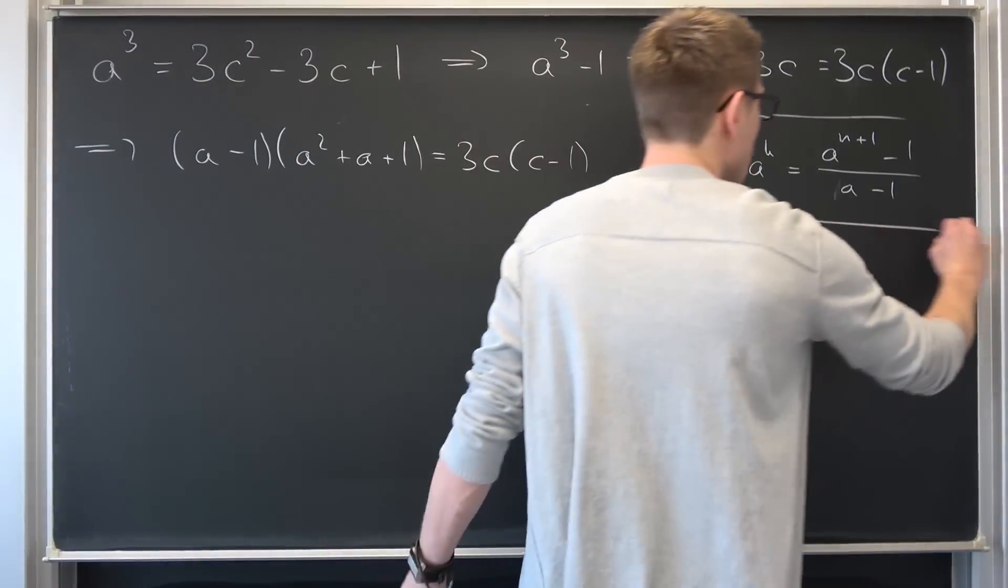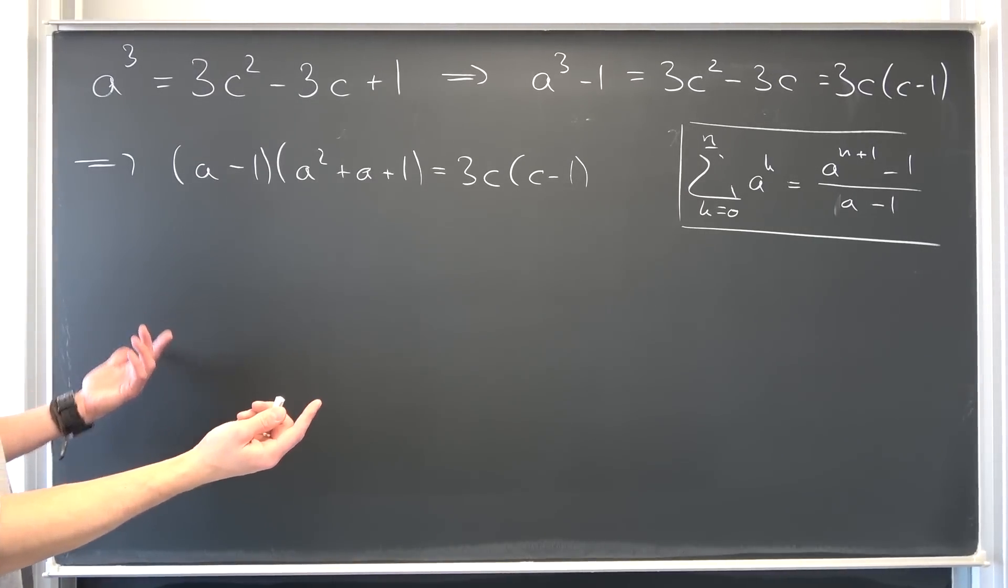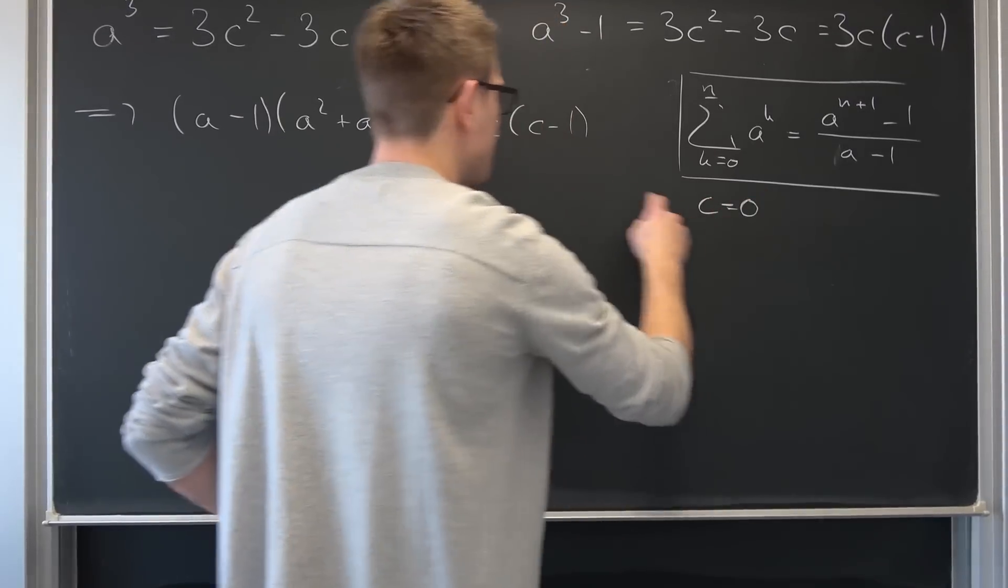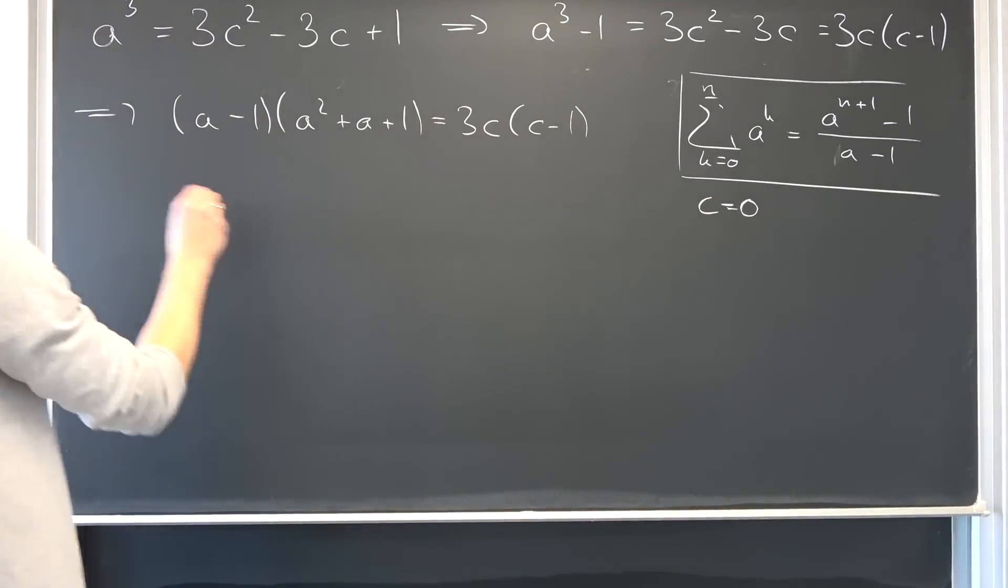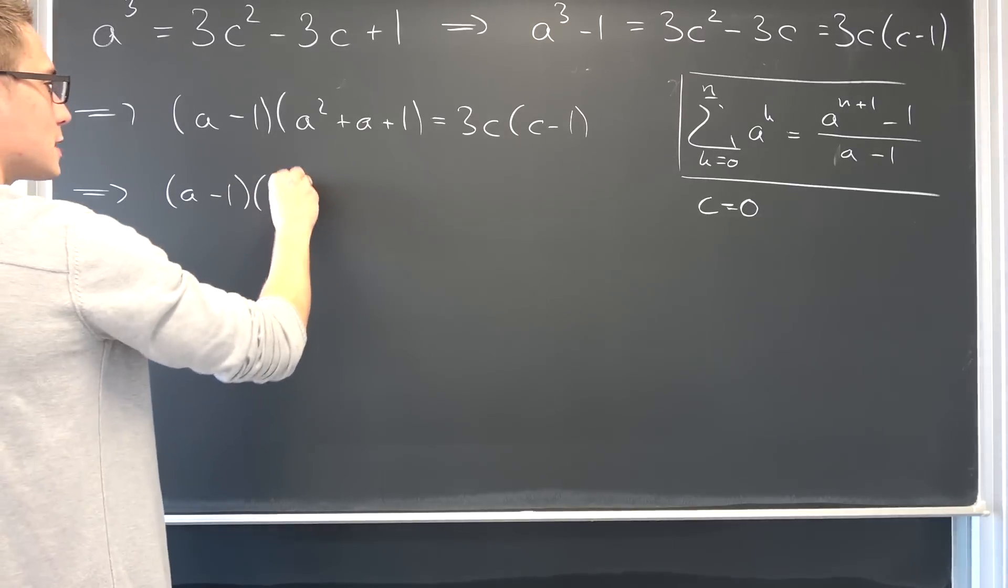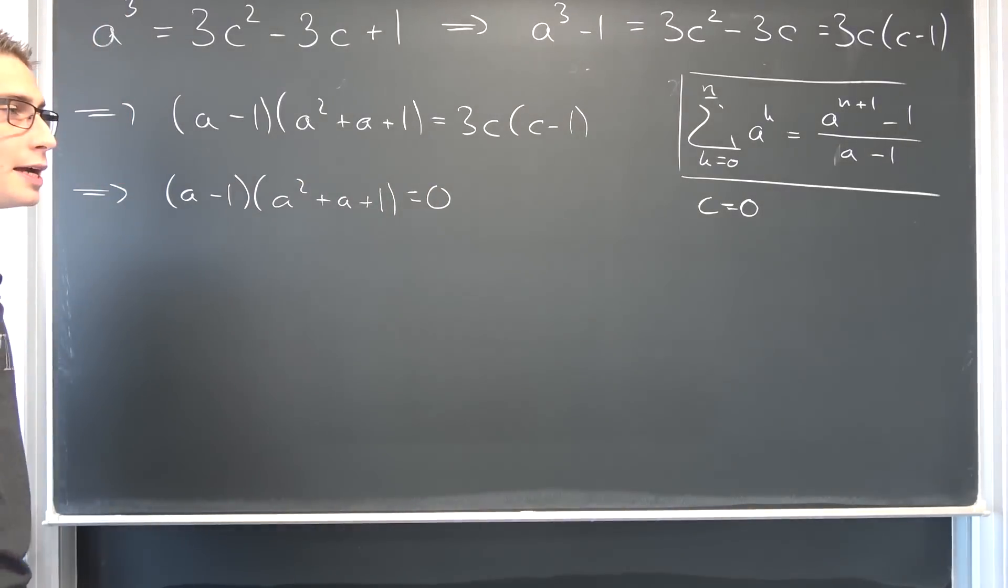Now, first thing we might want to look at is the roots of each and every linear factor right here. So c is equal to zero. Makes this whole thing go to zero, okay? For c being equal to zero, we are going to get a minus one times a squared plus a plus one is equal to zero, okay? This is the first one.